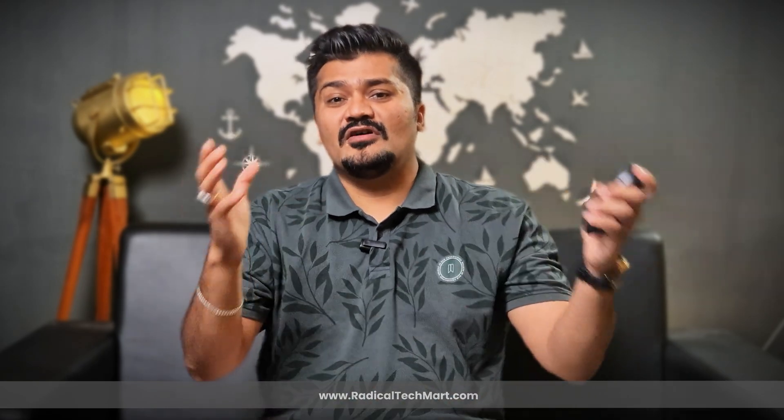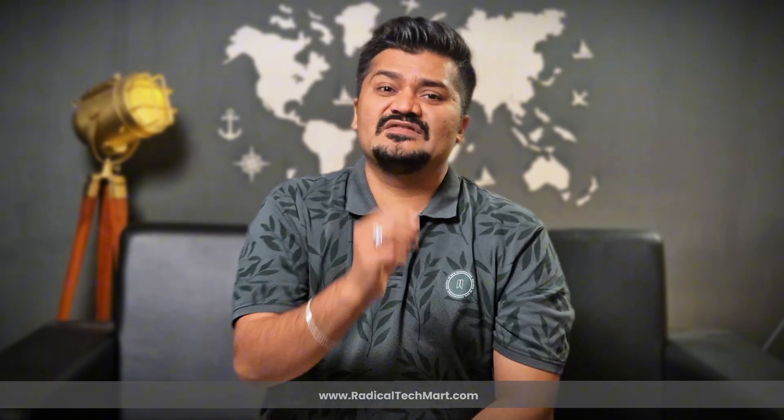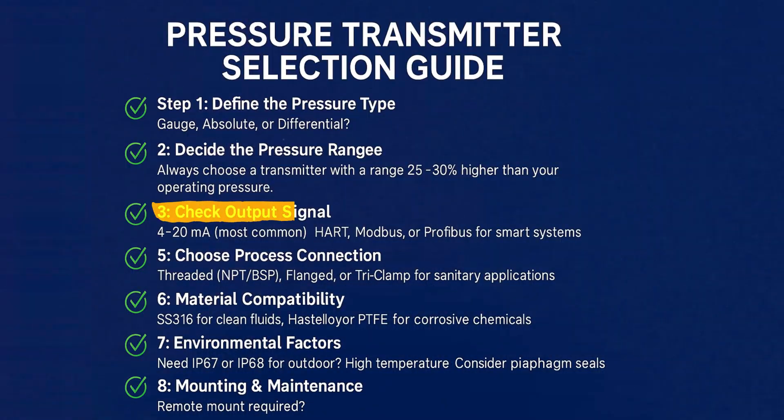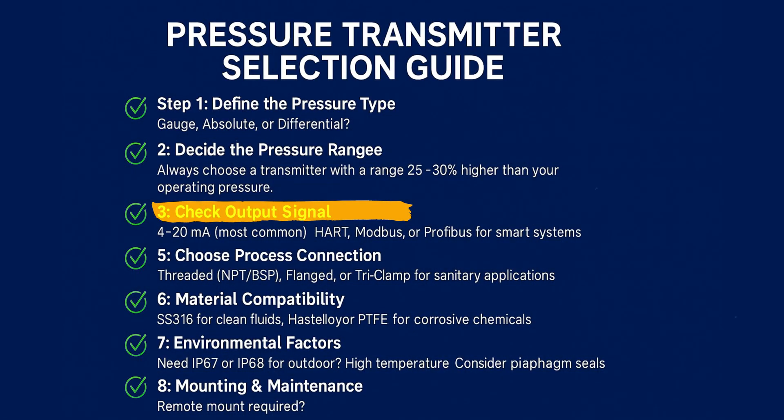Standard accuracy is ±0.5% for general use. For critical applications such as flow or level measurement, ±0.1% accuracy is recommended. Step 4: Select the output signal — 4 to 20 milliampere is the most common.